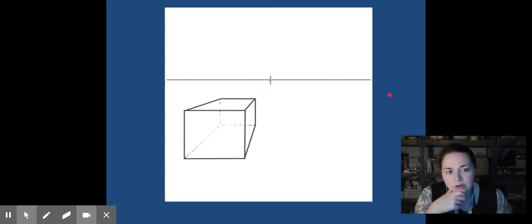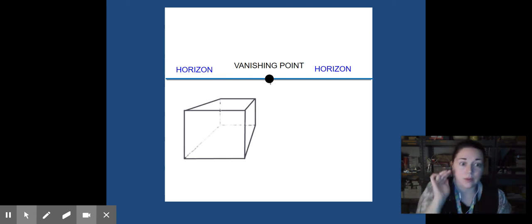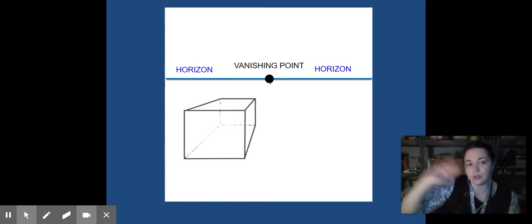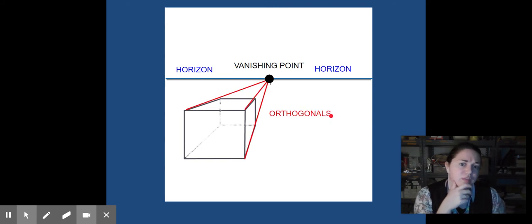A couple of vocabulary words for you to know as we move forward. We've already gone over vanishing point, where the lines converge. We also have the horizon line. Everything above your horizon line is your sky. Everything below your horizon line is the ground. Think about when we look into the horizon, we're looking into the distance. And then finally, orthogonal. The names of those lines that go towards the vanishing point, those are called orthogonals. A lot of these terms are commonly used in geometry.